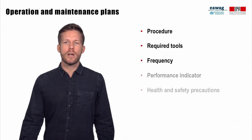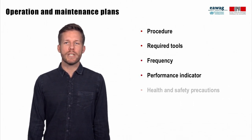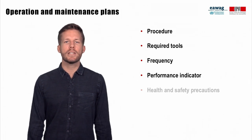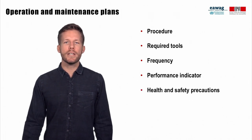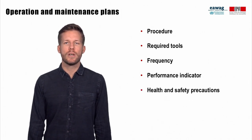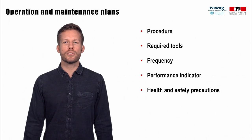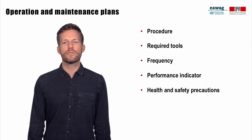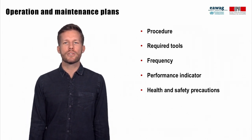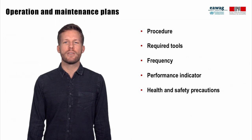Operation and maintenance plans also include performance indicators to measure whether the activity was successful, and health and safety precautions. Such precautions should prevent employees from getting sick, for example from pathogens, or being electrocuted from electrical devices.